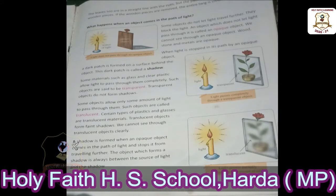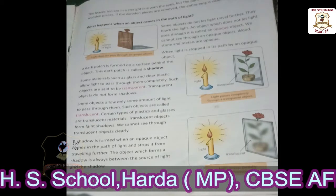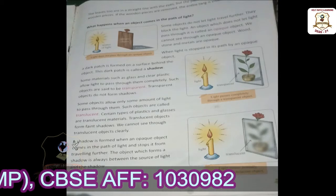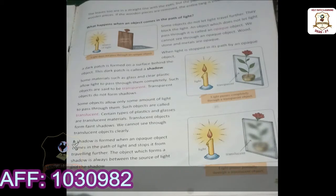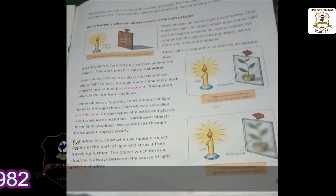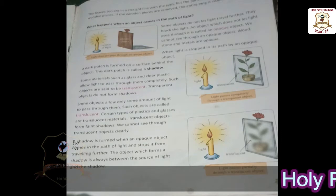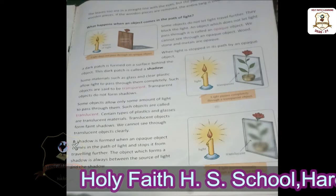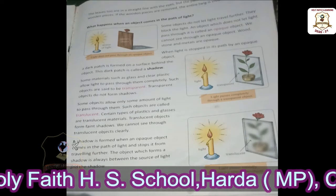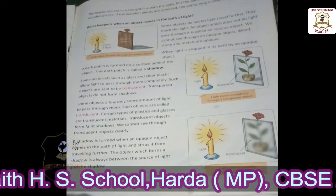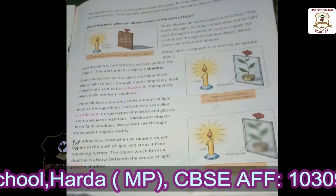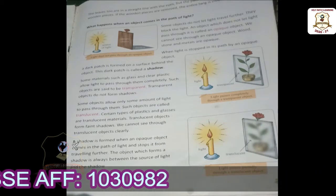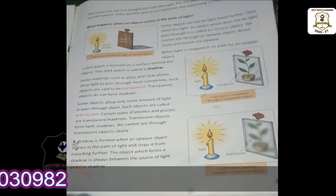We are getting sunlight from millions of kilometers away, which means light can travel from one place to another. When you switch on a torch, you can see things from a great distance. Third point: light travels in a straight line.